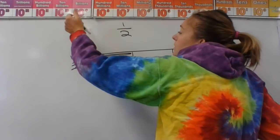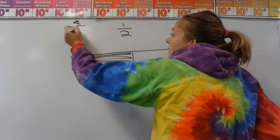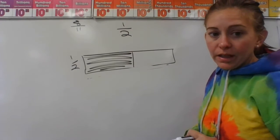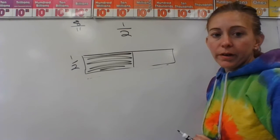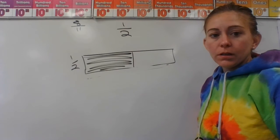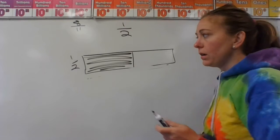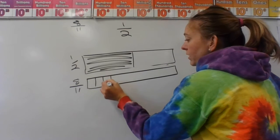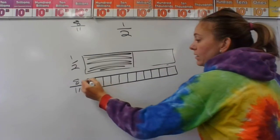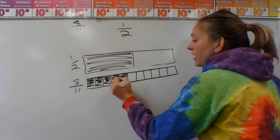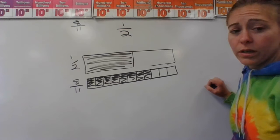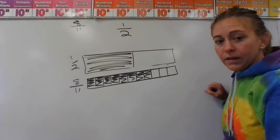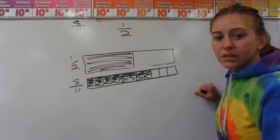I'll give you one to try. How about eight elevenths? First, draw a tape diagram for eight elevenths and one half, compare them, and then pause your video and start it back up when you're ready to check.